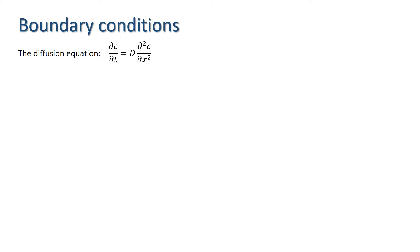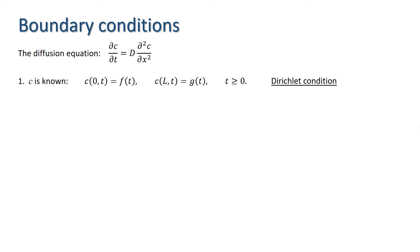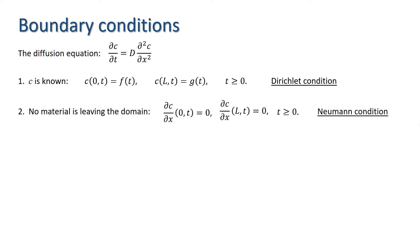We have two numerical schemes for the diffusion equation, which deal with internal nodes on a finite difference grid. To solve problems we also need to specify boundary conditions. There are three types: we can specify c at the boundary as a function of time — a Dirichlet condition; we can have a closed boundary — a Neumann condition; or we can have dc/dx dependent on both concentration and time.